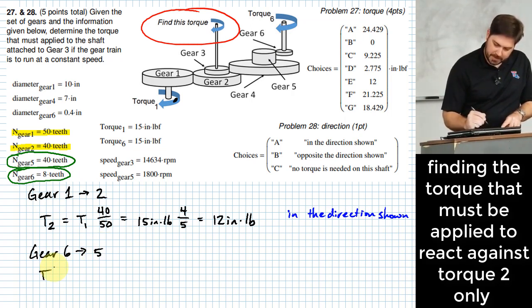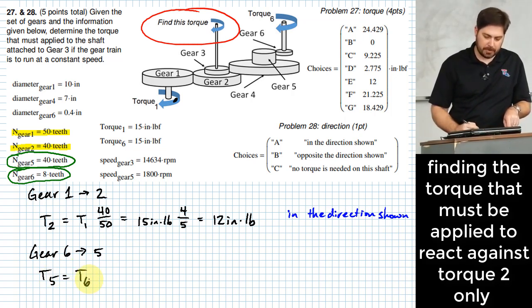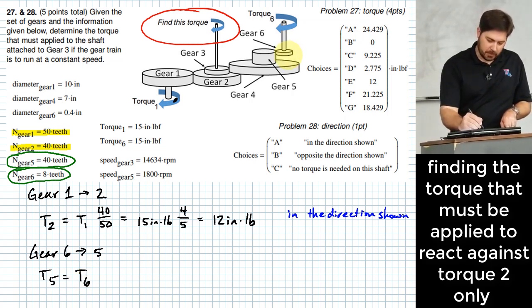Okay. And so what I'll say is T five is going to be equal to T six. And what fraction should I multiply by? Okay. Which one's bigger? Okay. Gear five is bigger than gear six. Right. And so we should have more torque carried in gear five than in gear six, because it's the bigger one. So I'm going to multiply there by 40 over eight.